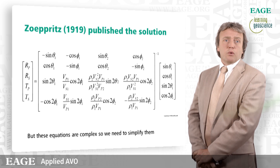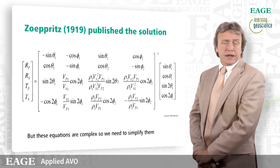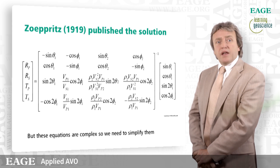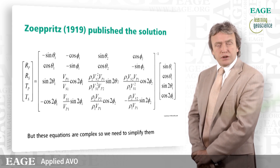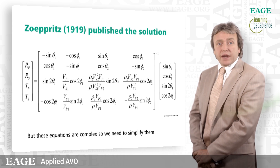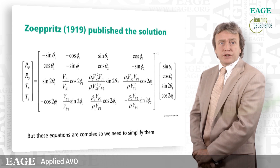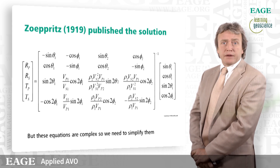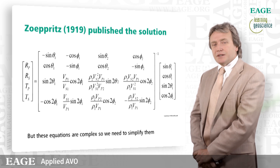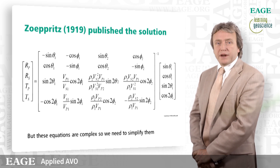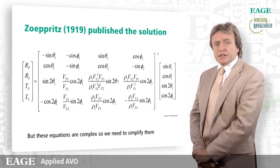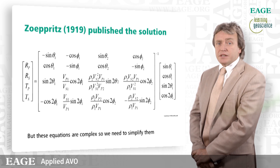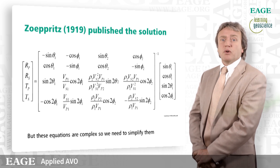On the left-hand side of the equation you'll see RP, RS, TP, and TS — the reflected P-wave, reflected shear wave, transmitted P-wave, and transmitted shear wave. Those are the four elements created at the interface at the moment of transmission and reflection. But to get them, look at the right-hand side: there's a four-by-four matrix, which is very complex. If we had to solve that equation for every single interface in the Earth, it's going to take a very long time, even with modern computers.